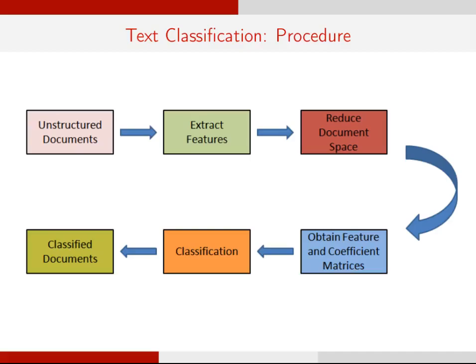The document space is reduced to generate feature and coefficient matrices. Next, appropriate classification techniques are used to label the documents. Here, we focus on reducing the document space and the generation of the feature and coefficient matrices.